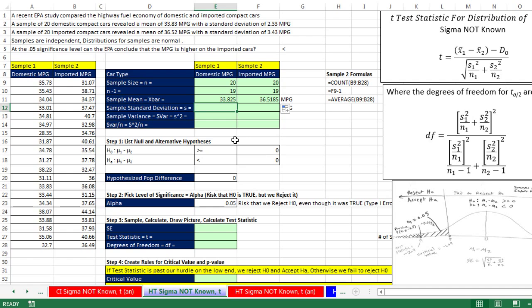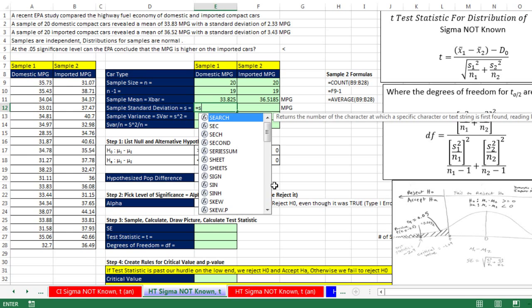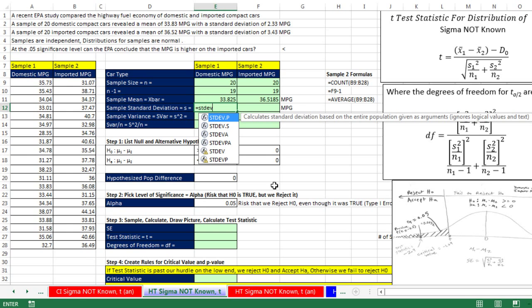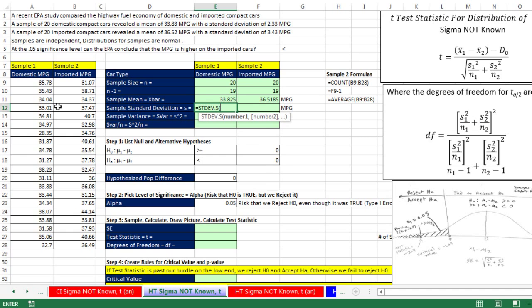Now we need to calculate our sample standard deviation. Equals STDEV, and it's dot S for sample. Highlight these. We don't ever really need to calculate our standard deviation. We could have just calculated our variance. But standard deviation, we've calculated so many times that we will go ahead and calculate. So 2.3 and 3.43.